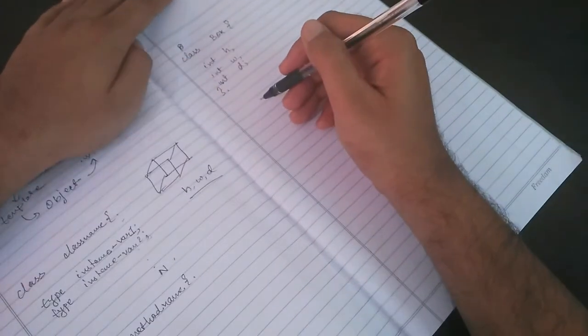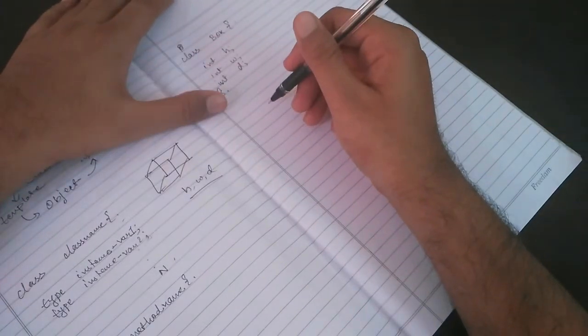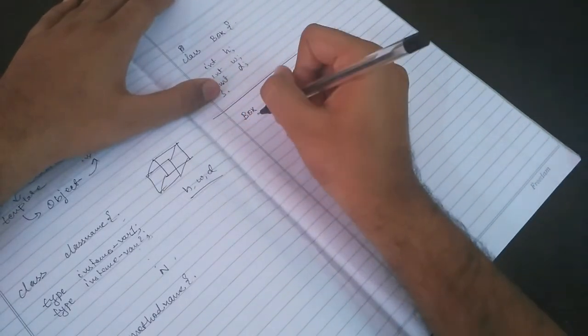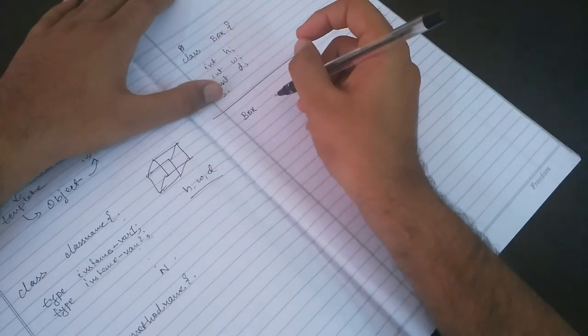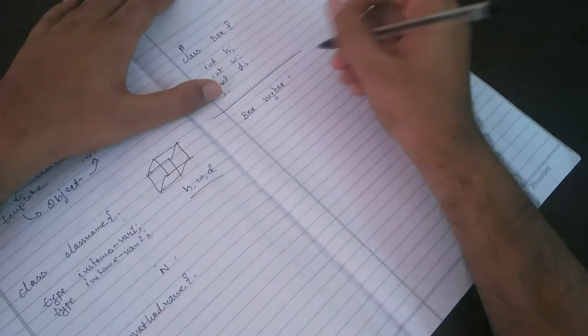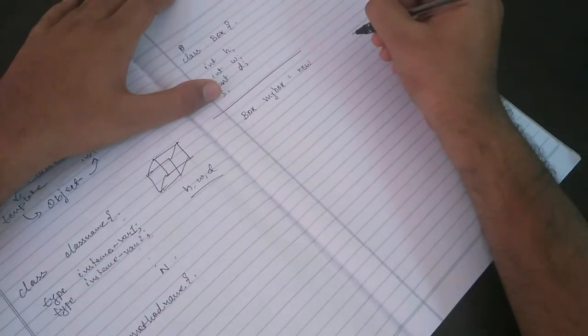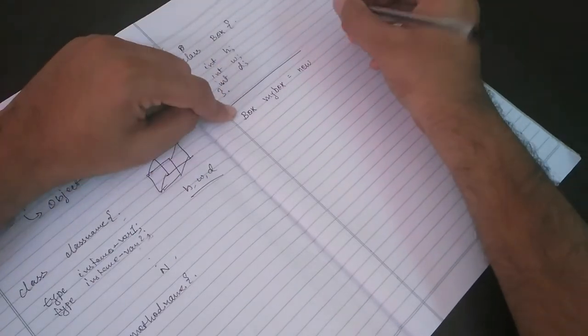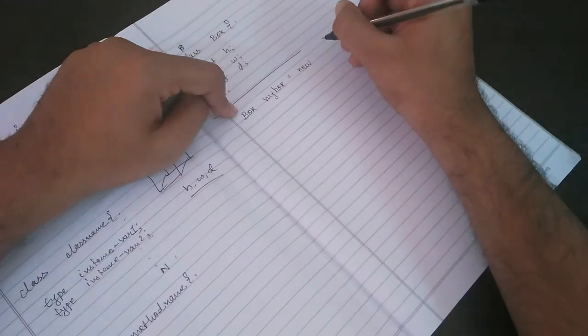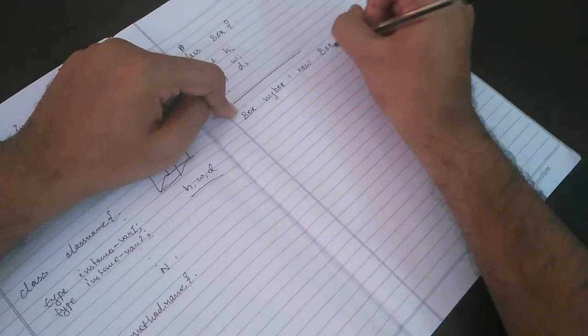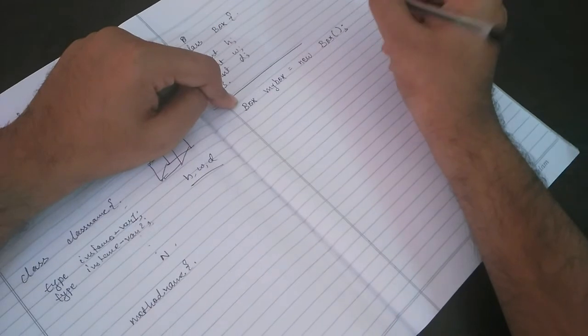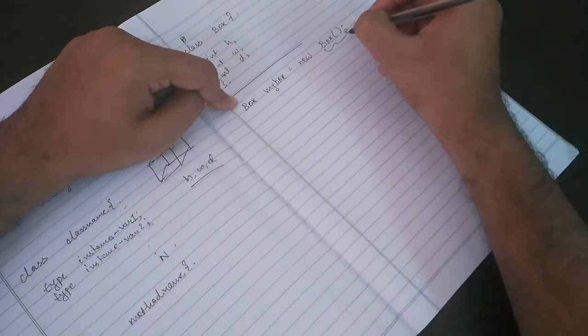Now, how will we create an object for this class? The object of this class will be created as: Box, the name of the class, then the name of the object. I will say myBox equals the keyword 'new' and again the constructor for this class. About the constructor, we will learn in upcoming videos. Box, the same name as the class with a parenthesis. So this is the constructor.